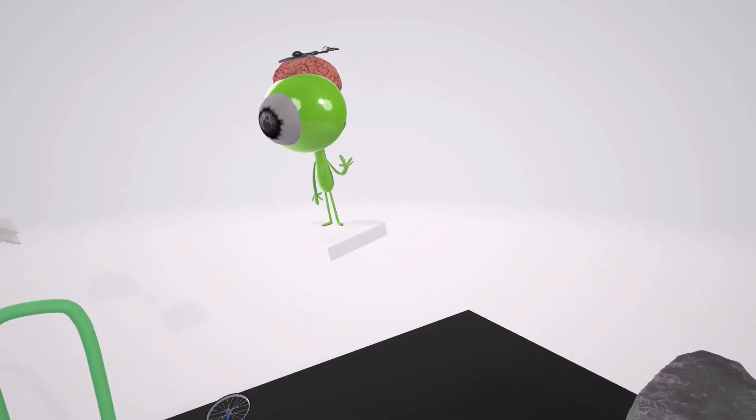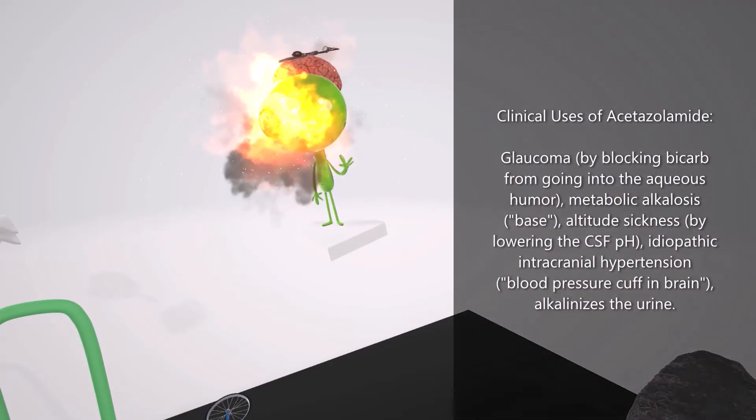Here we have this martian who's really entertained by the seagull. This martian has one eye that's exploding, which reminds us of glaucoma. Acetazolamide and other carbonic anhydrase inhibitors are sometimes used to treat glaucoma when there's high pressure in the eye. This is because carbonic anhydrase is also in the vascular tunic of the eye.